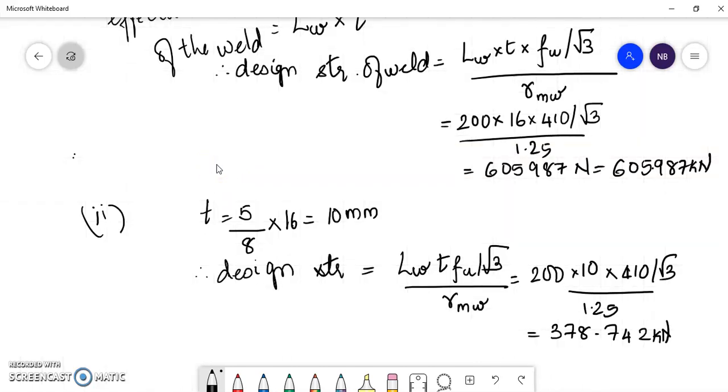One case in which the two plates are to be connected using a double V weld and in the other case a single V weld. We can see the difference in the strength that we obtain. Here it is 605 whereas here it is 378.74 kN.